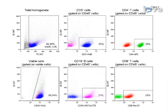Ultimately, flow cytometry can be used to analyze the infiltrating lymphocyte subpopulations.